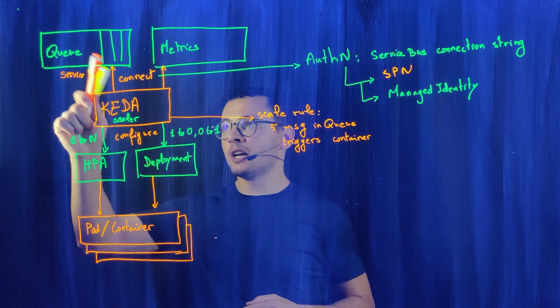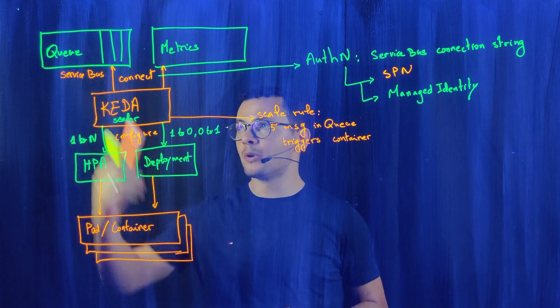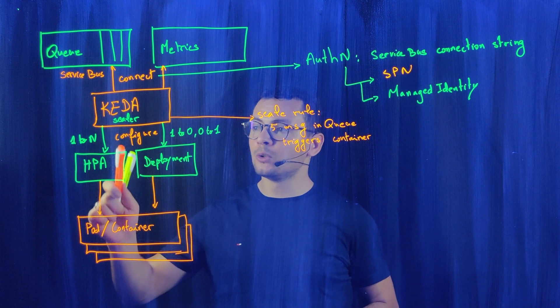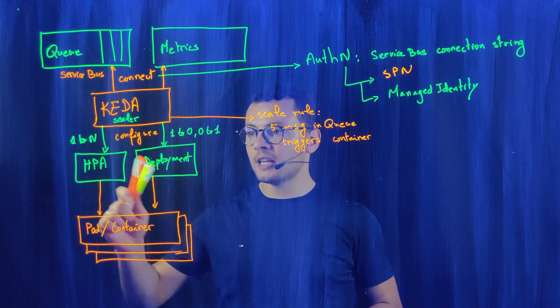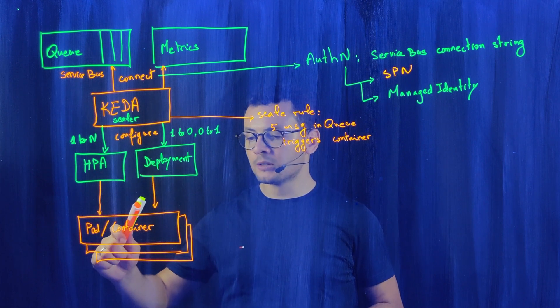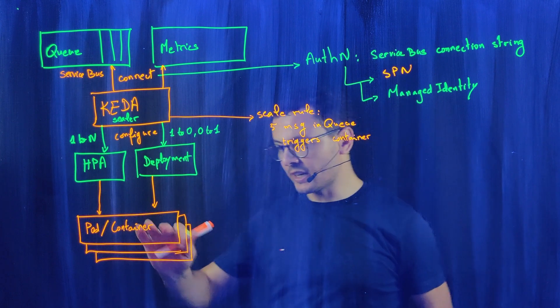Now, after KEDA has connected to those external systems, it gets the data, the number of messages, then it will trigger the scaling of those workloads. Once these workloads start running here,